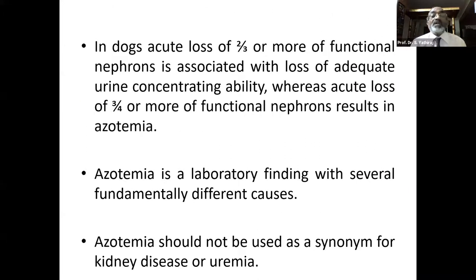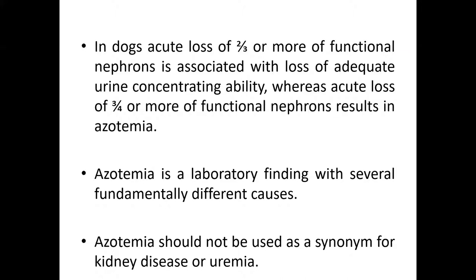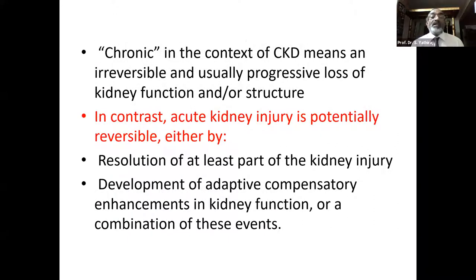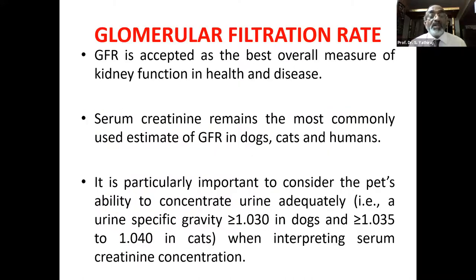In dogs, acute loss of two-thirds or more of functional nephrons is associated with loss of adequate urine concentrating ability, whereas acute loss of three-fourths or more of functional nephrons results in azotemia. Azotemia is a laboratory finding with several fundamentally different causes and should not be used as a synonym for kidney disease or uremia. In the context of CKD, chronic means an irreversible and usually progressive loss of kidney function, in contrast to acute kidney injury which is potentially reversible.